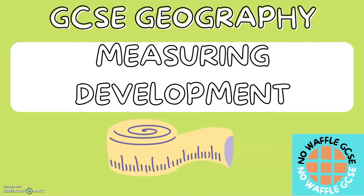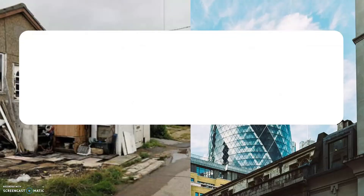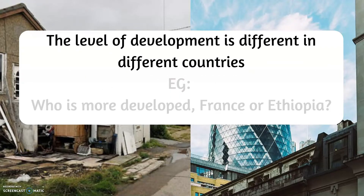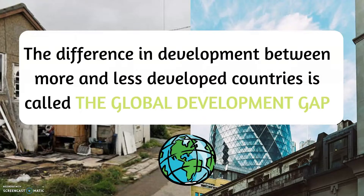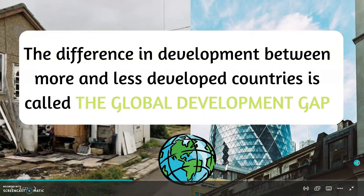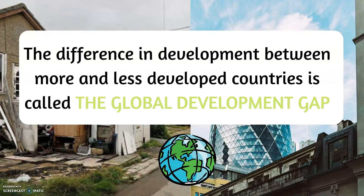GCSE Geography – Measuring Development. Development is the process of economic growth through the use of technology and improving a place's welfare. The level of development is different in different countries. For example, who do you think is more developed – France or Ethiopia? The difference in development between more and less developed countries is called the global development gap.